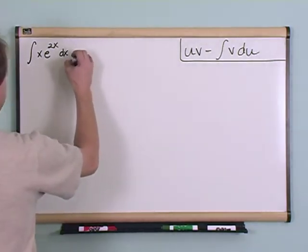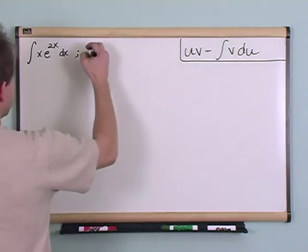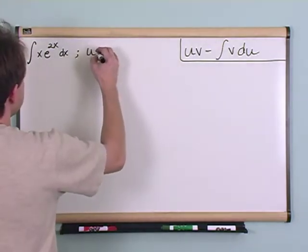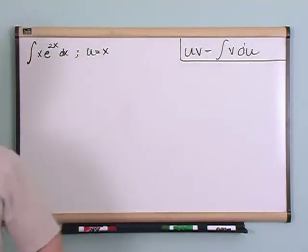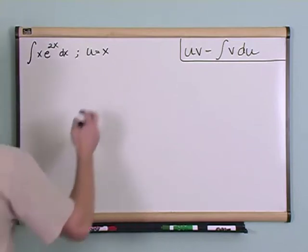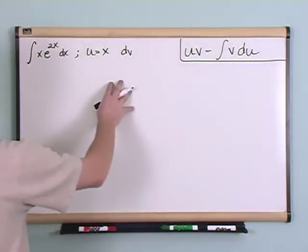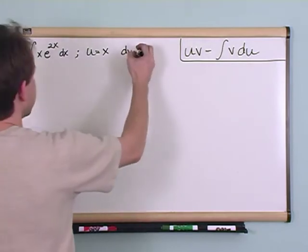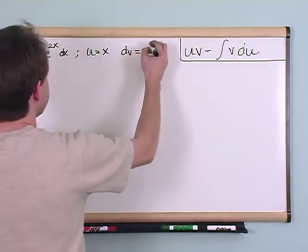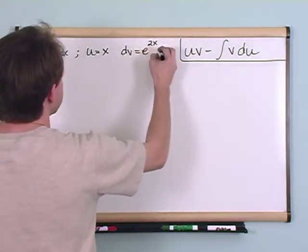First thing you do is you define a u, just like we do before. I'm going to define u is equal to x. The next thing you do is you define a dv. I know this doesn't make any sense but you do it, and that's going to be in this case equal to e to the 2x dx.